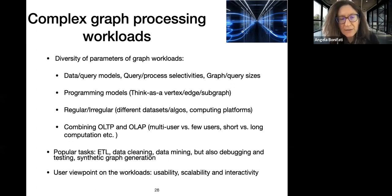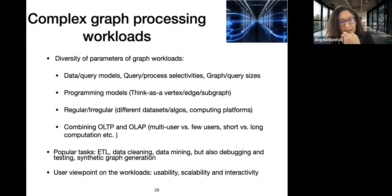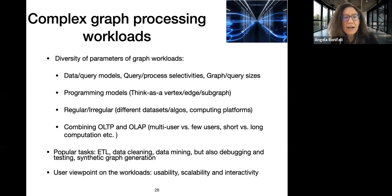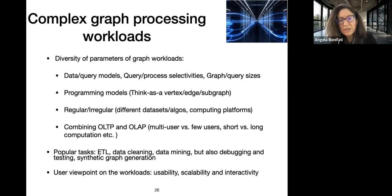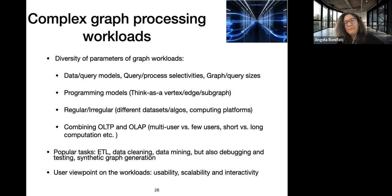Other parameters include whether workloads combine OLTP and OLAP or work on them individually, and tasks like debugging, testing, and synthetic graph generation. There is a trend in machine learning toward synthetic data, since ML processes are centered around specific datasets and need more data to test algorithms — this applies to synthetic graph data as well. User viewpoints — usability, scalability, and interactivity of workloads — are also parameters to consider.